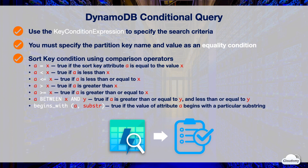You can use the equality condition to find the item exactly matching the sort key. You can also use the less than or greater than operator to select a range of matching items. You can use the between operator to find items within a specific range. Key condition expression also supports string comparison — you can use the begins_with function to find any items that have sort key attributes beginning with a particular substring.